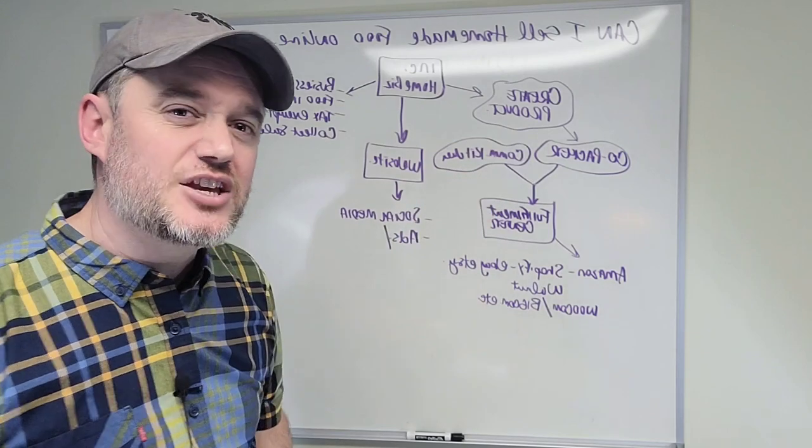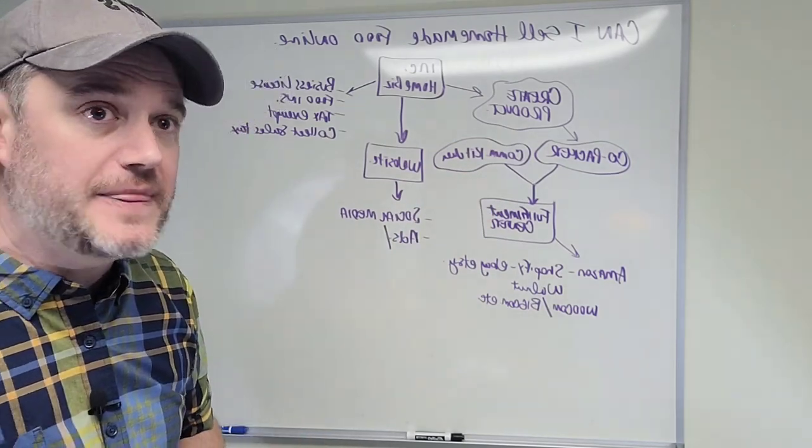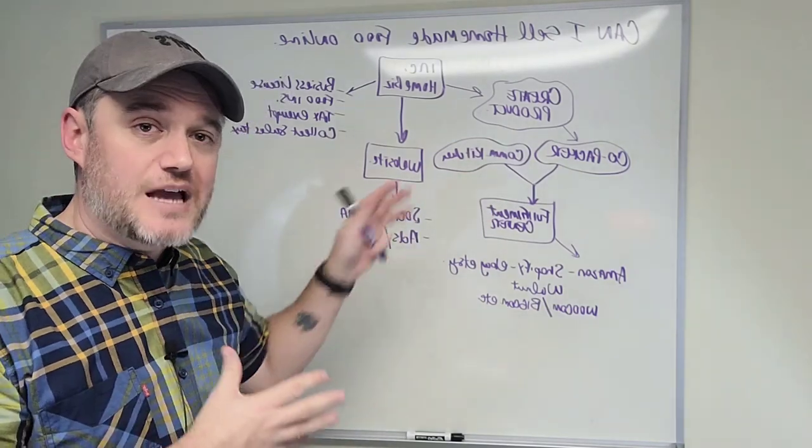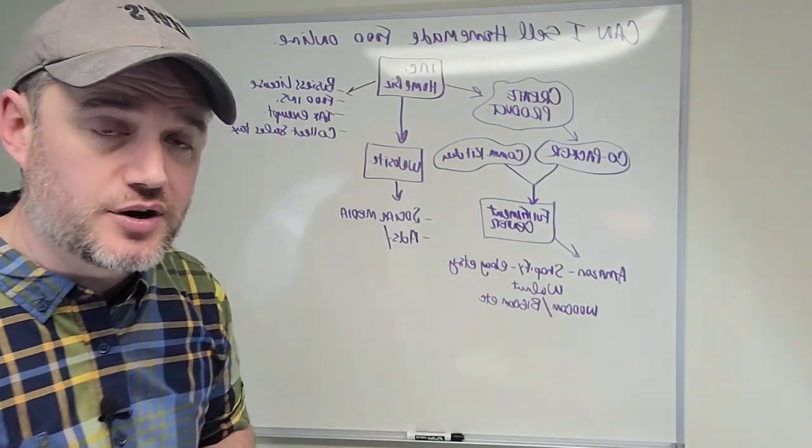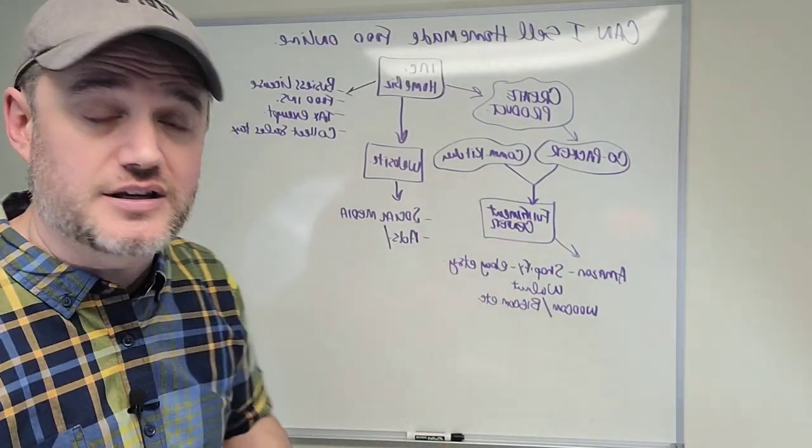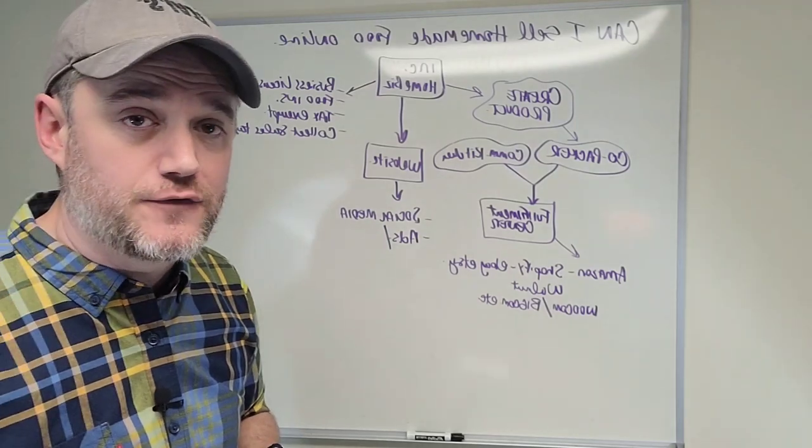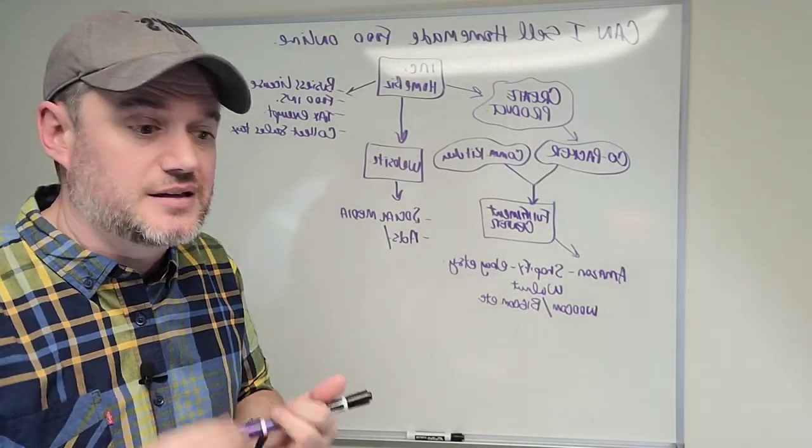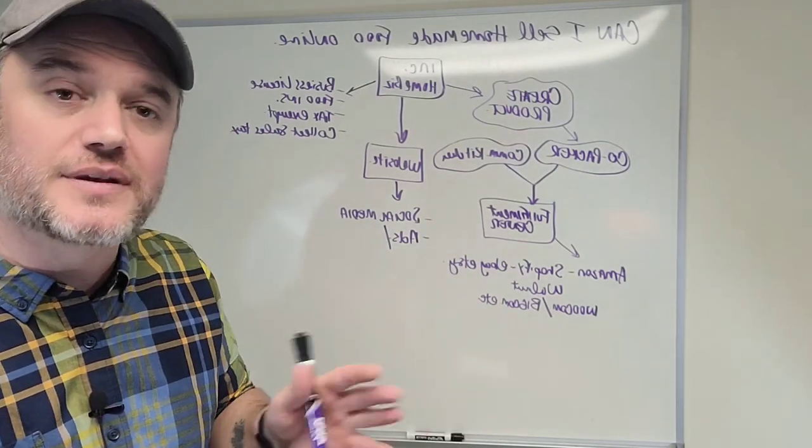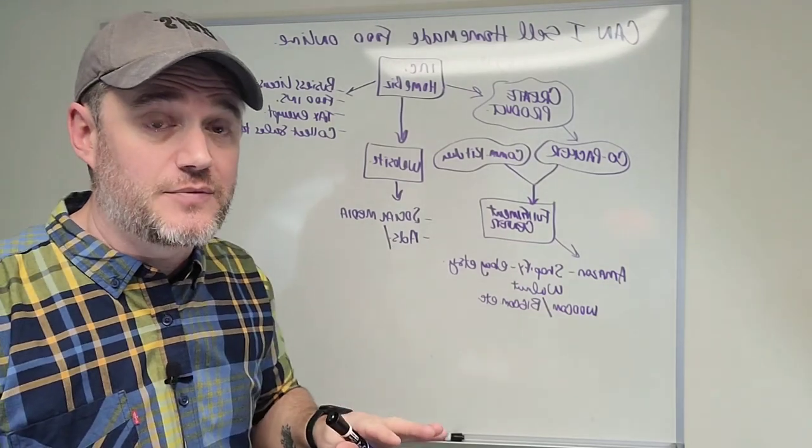Now, step two, obviously, you need to create a product. Now, when you start to do this type of business model where you want to sell a food product online in different areas, different e-commerce areas, it's not necessarily going to be the type of food that you think is going to be delivered like a pizza, a sandwich, a sub, or some chicken wings or something like that. This is not for that type of a business.